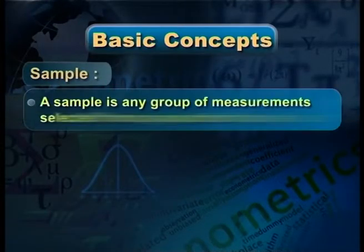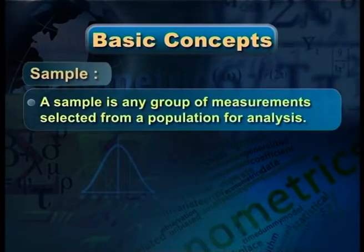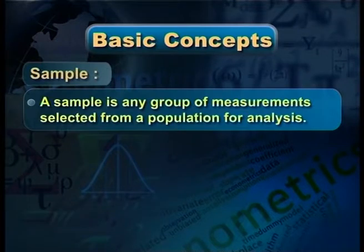In finite population, we can count how many units are there. Whereas in infinite population, the number cannot be counted. Then, sample: a sample is any group of measurements selected from a population for analysis.